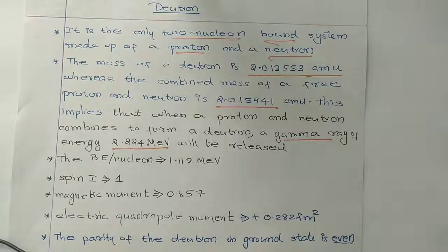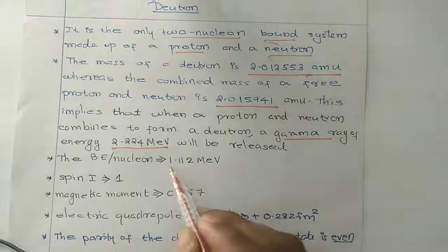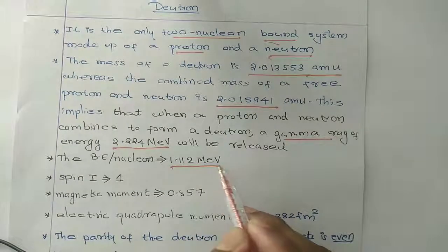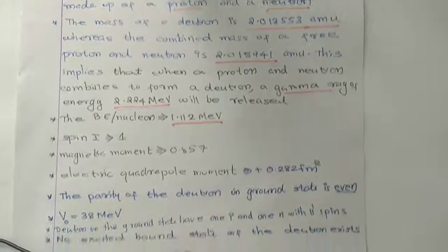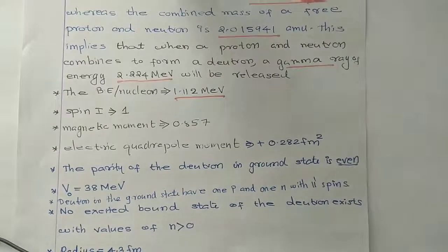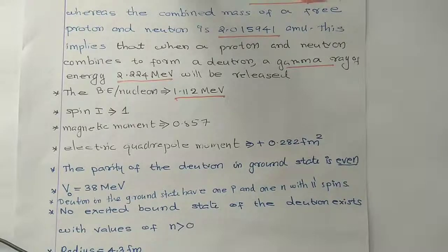This is the nucleus of the deutron. The binding energy is 1.112 amu. Spin of deutron is 1. Magnetic moment is 0.850.